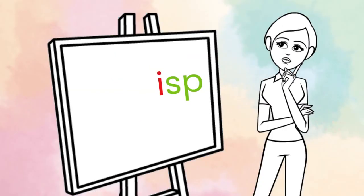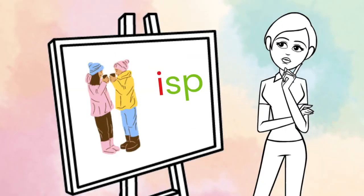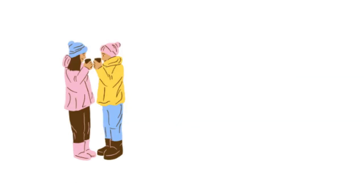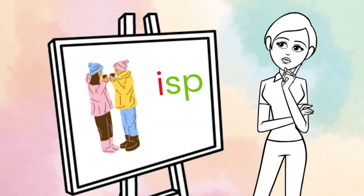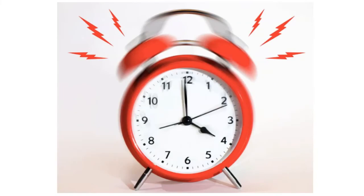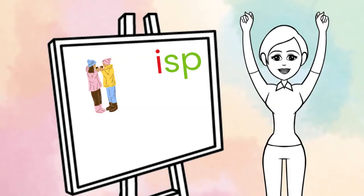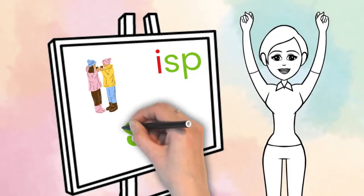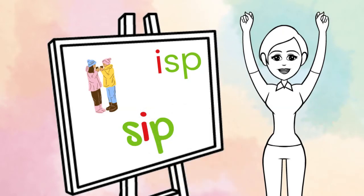Next word. How do you spell 'sip'? Three, two, one, go! Sip. S-I-P. S-I-P spells sip.